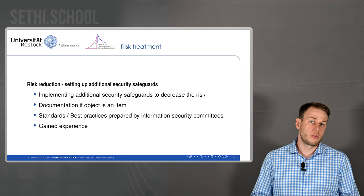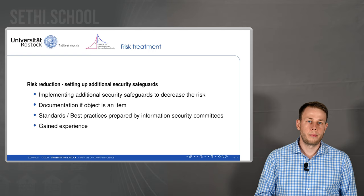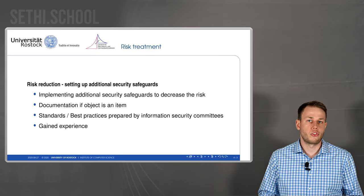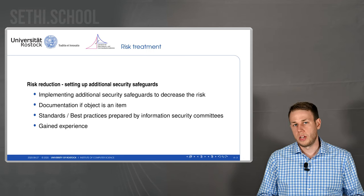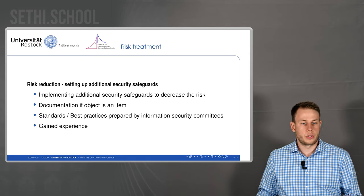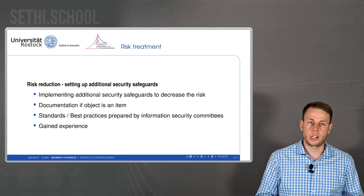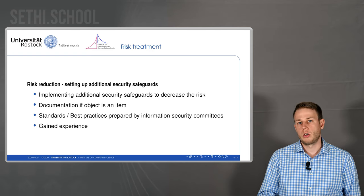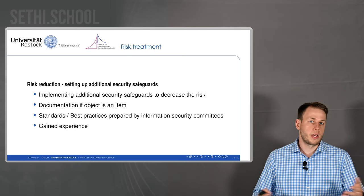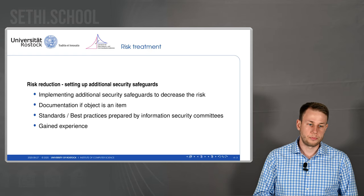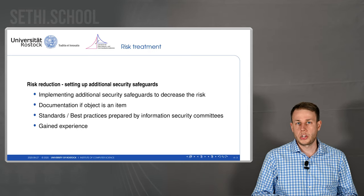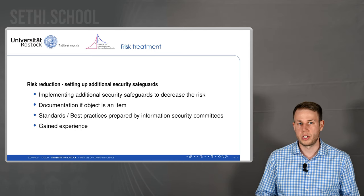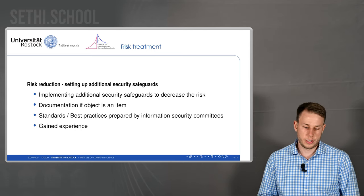Risk reduction is always a good idea. It involves setting up additional security safeguards, which normally decrease the risk if you choose the right ones. Documentation is always important when the object of interest is an item. There are normally standards and best practices where you can find additional security safeguards to implement — normally handed out by information security committees such as the BSI. You can also find additional safeguards from professionals who have gained experience and know which countermeasures are the right ones.